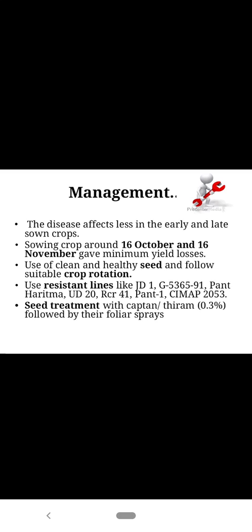Management: sowing time should be around 16 October to 16 November to minimize the yield losses. Use healthy, disease-free seed. Follow crop rotation since the pathogen is seed or soil-borne. Use resistant lines such as Pant-Haritma, JD1, and Pant-1. Seed treatment with recommended seed dressers at recommended application dose is also advised.